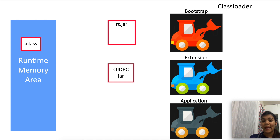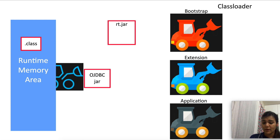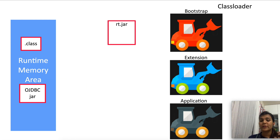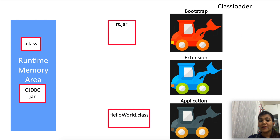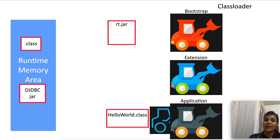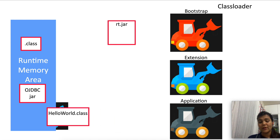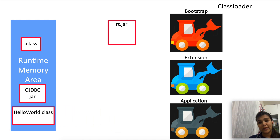For example, if you need to connect to the Oracle database, you'll use the ojdbc jar file and this is going to be loaded by the extension loader. Third is the application loader — its job is to load your application class files that are defined in the class path. In my example I had the HelloWorld.class file, so the application loader is going to load this .class file into the runtime memory area. This way you have all three loaders loading different types of .class files.